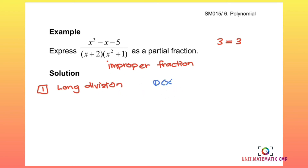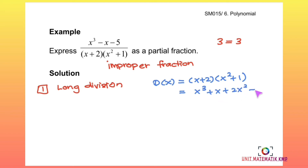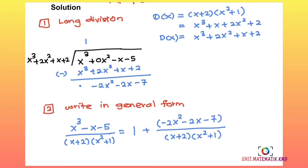First, let's find D(x): D(x) = (x + 2)(x² + 1). Expanding: x³ + x + 2x² + 2, so the divisor is x³ + 2x² + x + 2. After performing long division, the quotient is 1. We write the result in the general form: P(x)/D(x) = Q(x) + R(x)/D(x). The remainder part is a proper fraction.